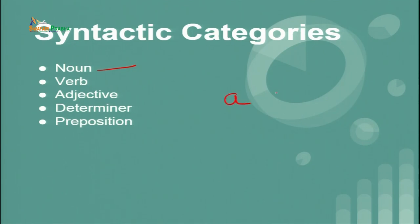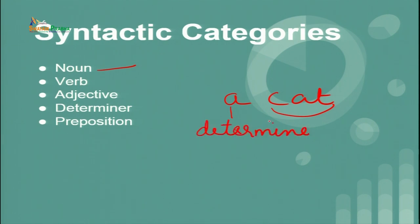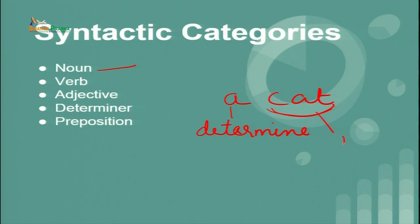For example, you look at 'a cat.' 'A' is a determiner. Determiners include articles and also words like 'some,' 'few,' demonstratives, possessives, and so on. Here, 'cat' is the noun not because it is the name of an animal, but rather because it positions itself right after the determiner.